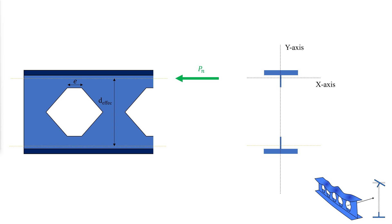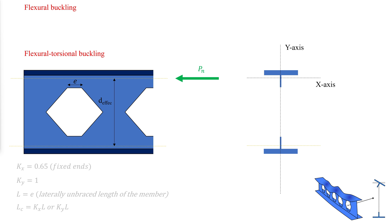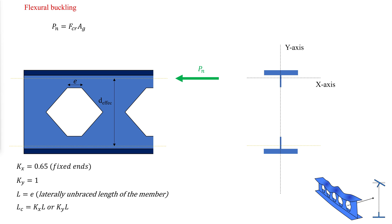The nominal compressive strength Pn is the lowest value obtained based on the applicable limit states of flexural buckling and flexural torsional buckling. From section E3 of the AISC specification for members without slender elements, the nominal compressive strength for flexural buckling is calculated using the following equation. The strength should be reduced by a reduction factor phi, taken as 0.9.